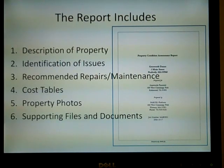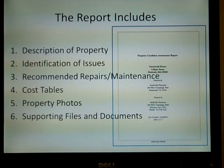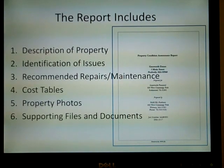The product of a PCA is called a property condition report, or PCR. The major components of the report include a description of the property, system-by-system identification of issues, recommendations of replacements or repairs, cost tables to summarize the findings, supporting photographs, and files or documents that may be relevant to the assessment.